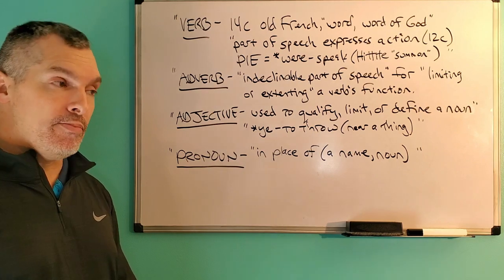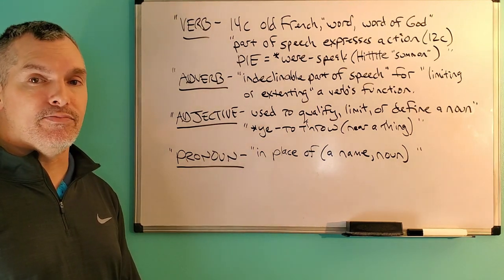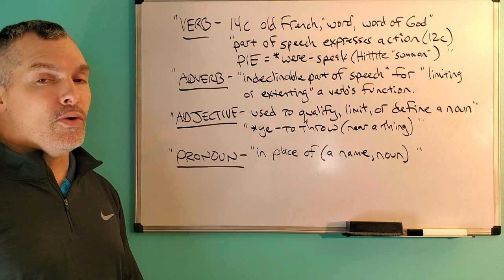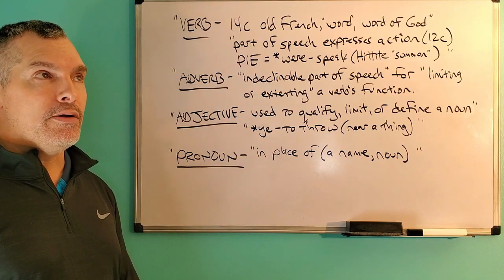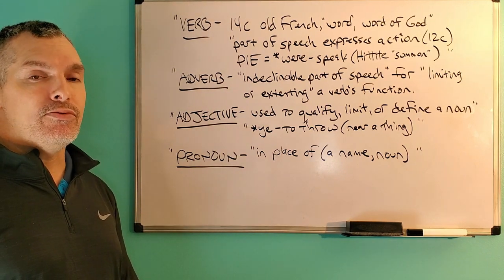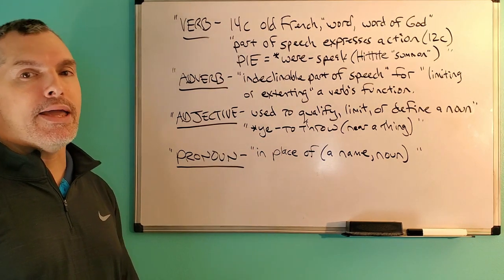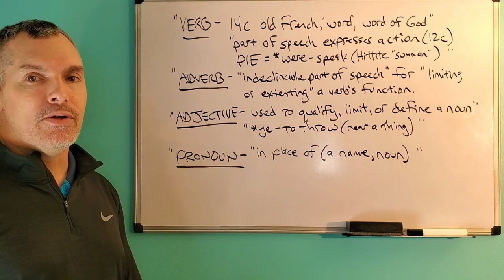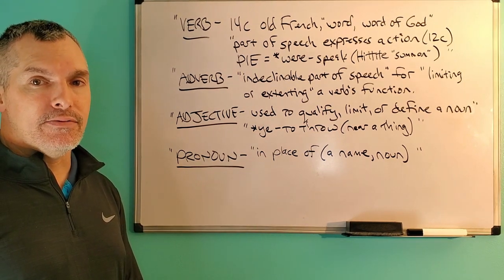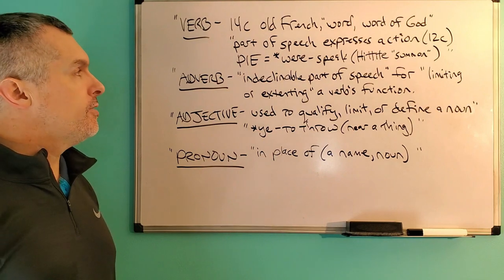They can bank the values. They can put the adverb, verb, adjective, pronoun — one, two, three, four — but they are not able to say why the adverb's an adverb or the adjective's an adjective. Hopefully this will help.